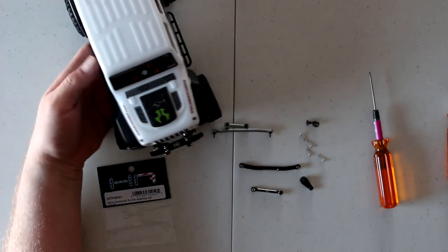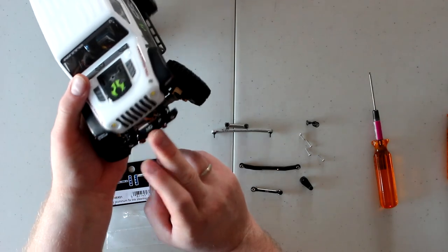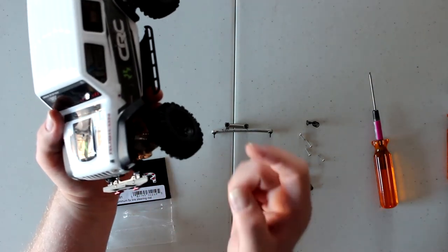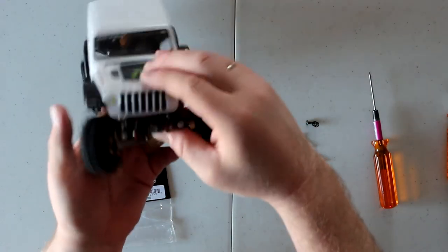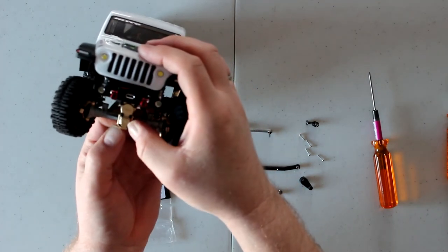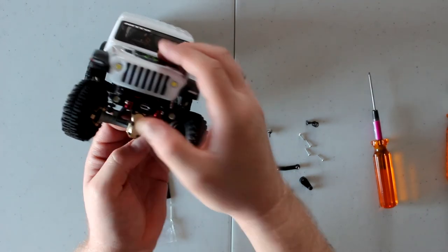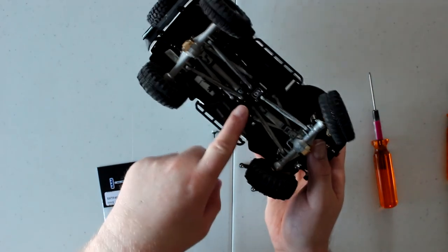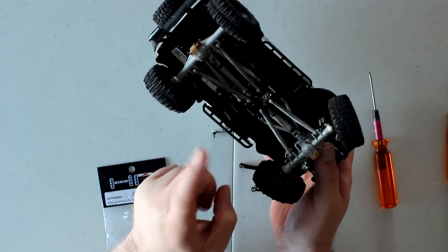I have the diff cover upgrade in brass, the knuckles in brass too, and the skid plate in brass and aluminum.